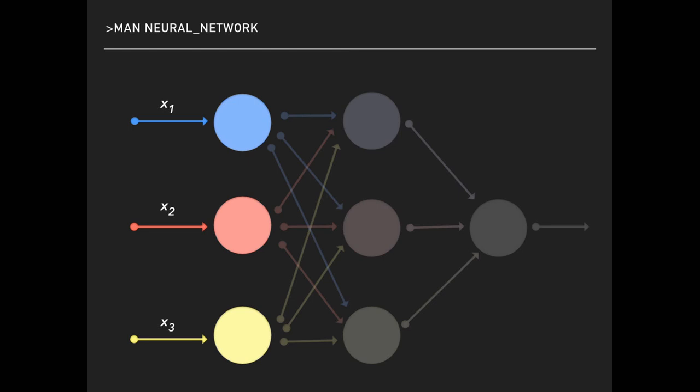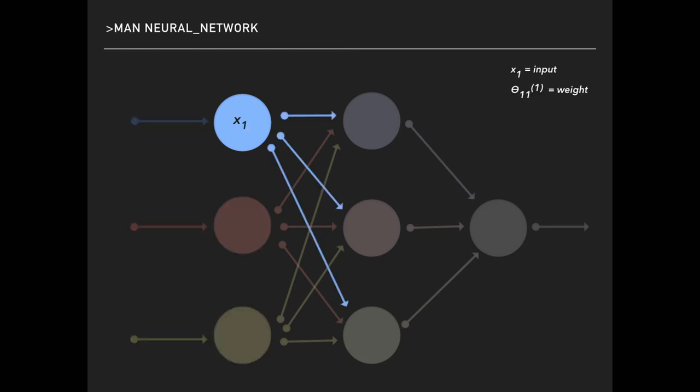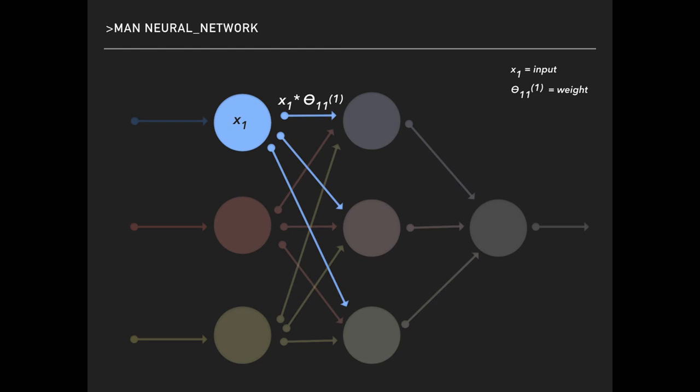In the first layer we get our inputs. We call those x — we have three different inputs, three different features, x1 to x3. If we look at the first neuron of the first layer, we see that it puts out three different values. This is the math part. I put a legend to the side so you remember what I'm talking about. x1 would be our input and theta111 is just a weight. Theta in this case is a matrix — if you don't know what a matrix is, just imagine it as a kind of JavaScript object, and the 111 would be the keys to access the value behind it.